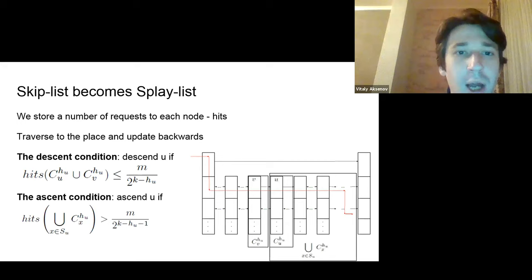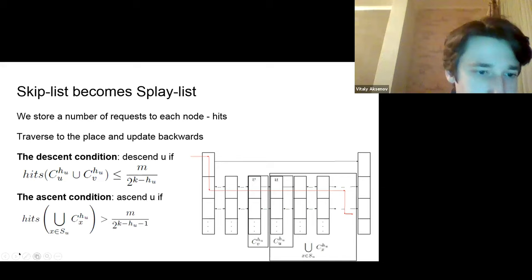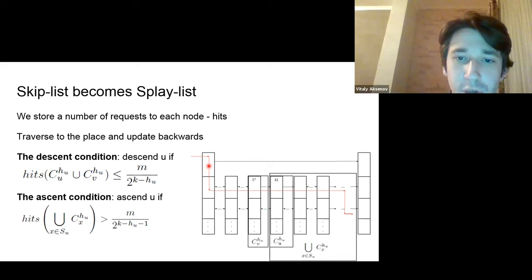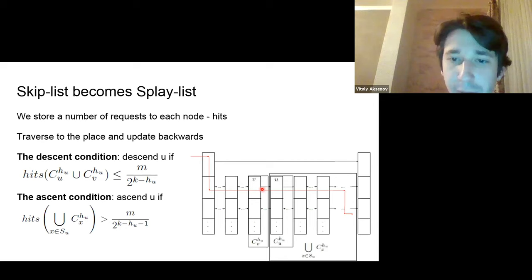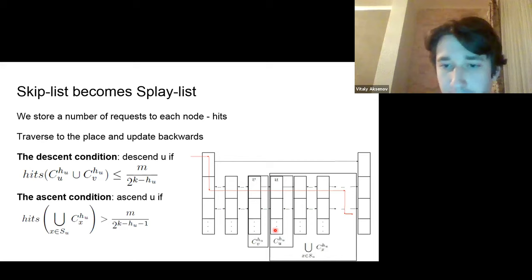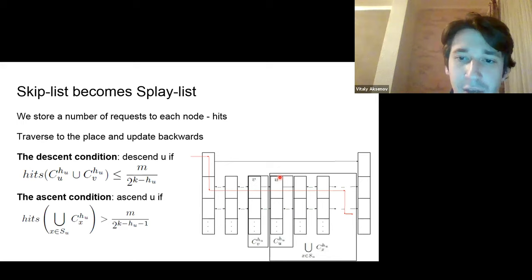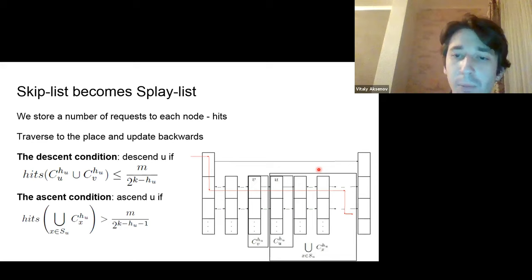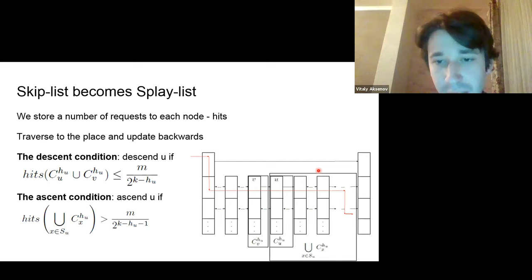Can we build a better alternative on top of SkipList? We call it Splaylist, an invasive SkipList. We store the number of hits per each element—the number of operations done per element. An operation traverses to the place as in a SkipList, updates the hits, and rebalances on the backward path. There are two conditions: the descent condition, where if the total number of hits in the sub-tree is small we don't need two shortcuts on that level and can reduce the level of U; and the ascent condition, where if the number of requests passing through element U is large, it can go up.